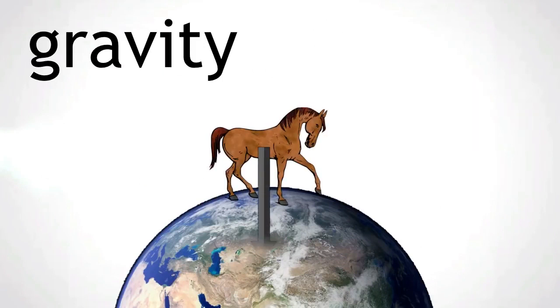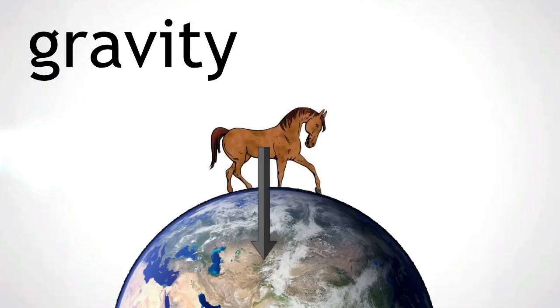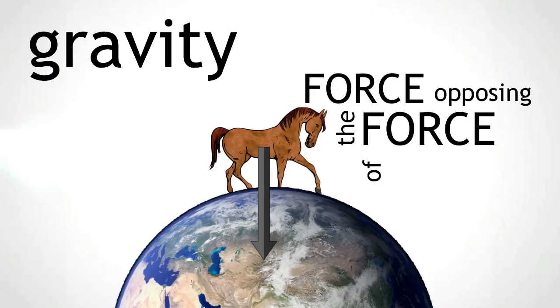An arrow is drawn downwards from the horse towards the centre of the earth. If this were the only force acting on the horse, it would sink into the ground. As this is not the case, there must be a force opposing the force of gravity.